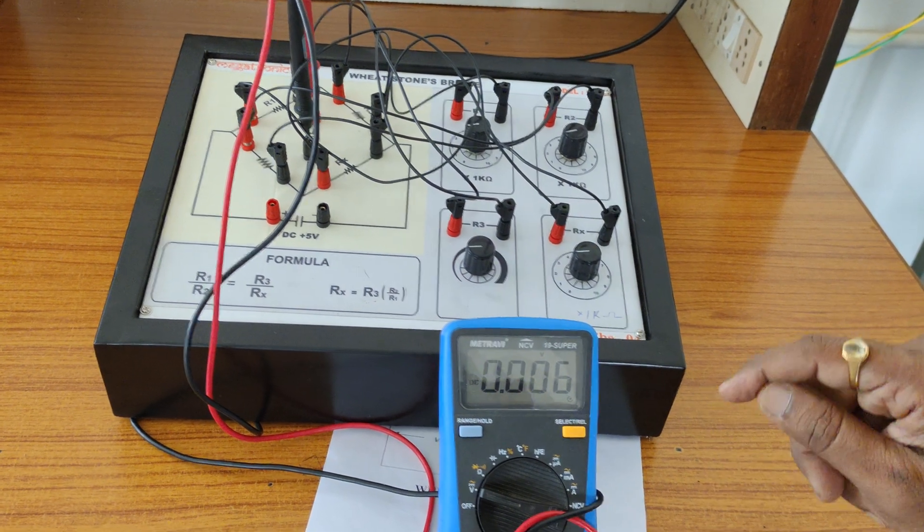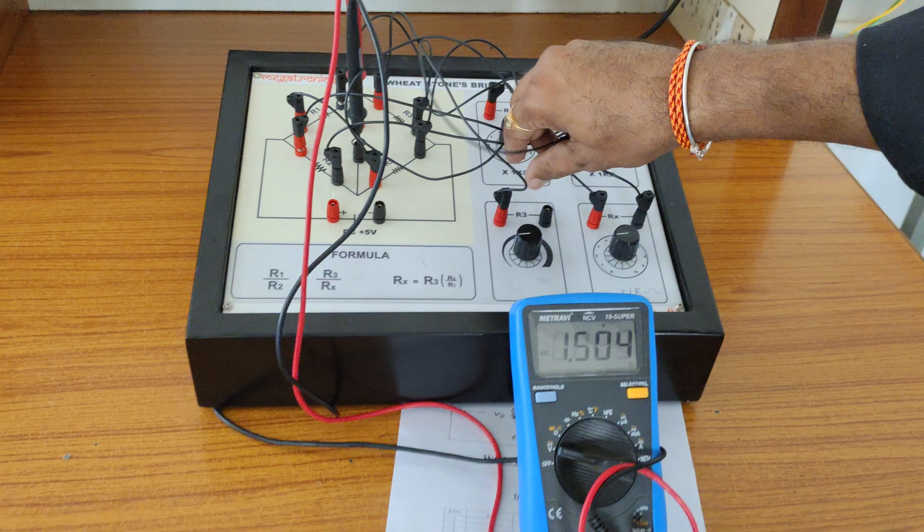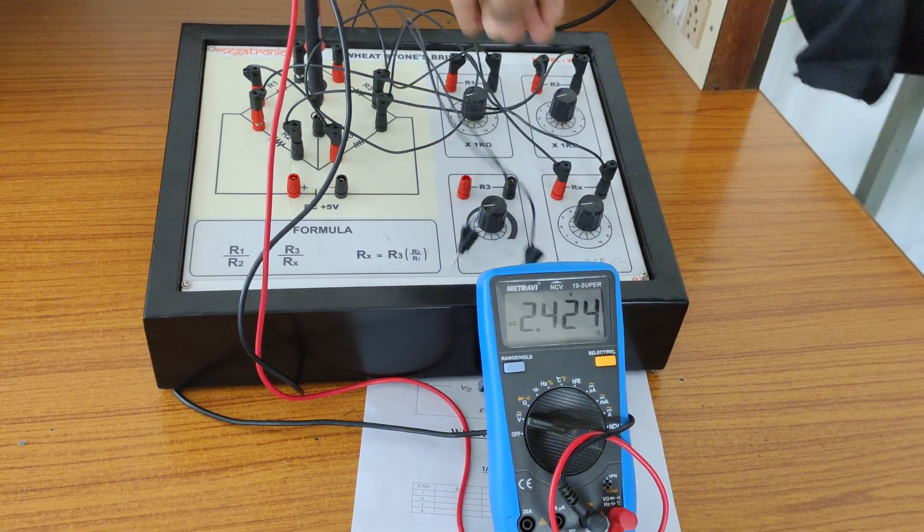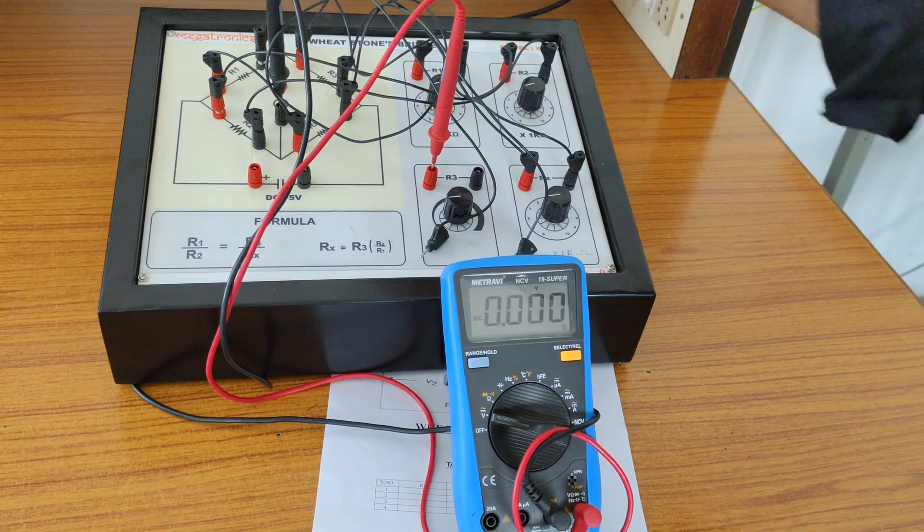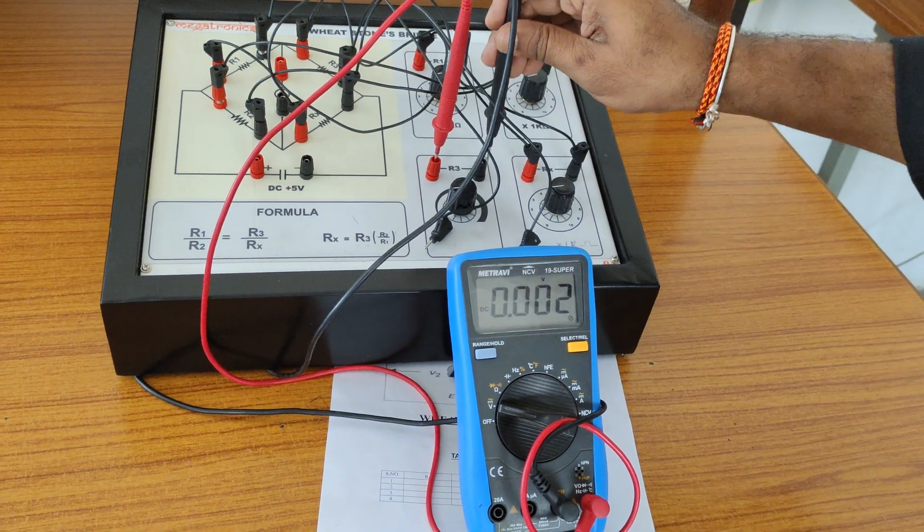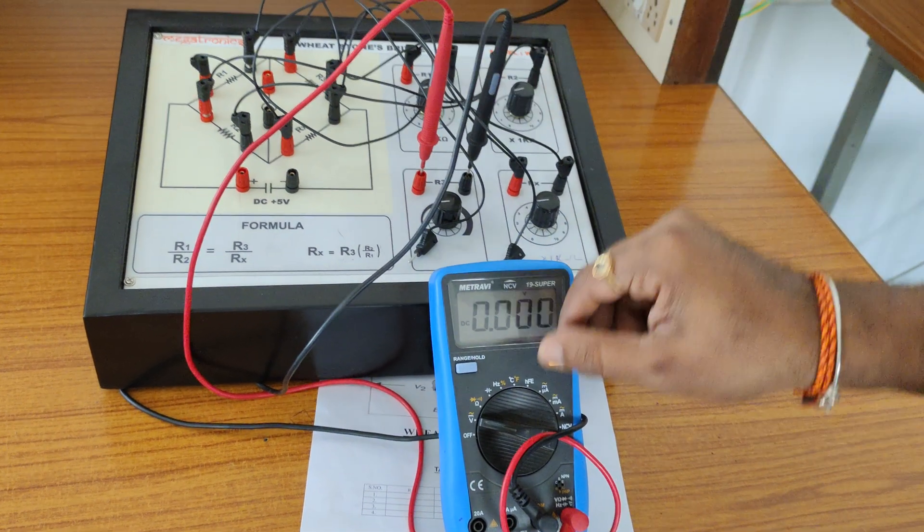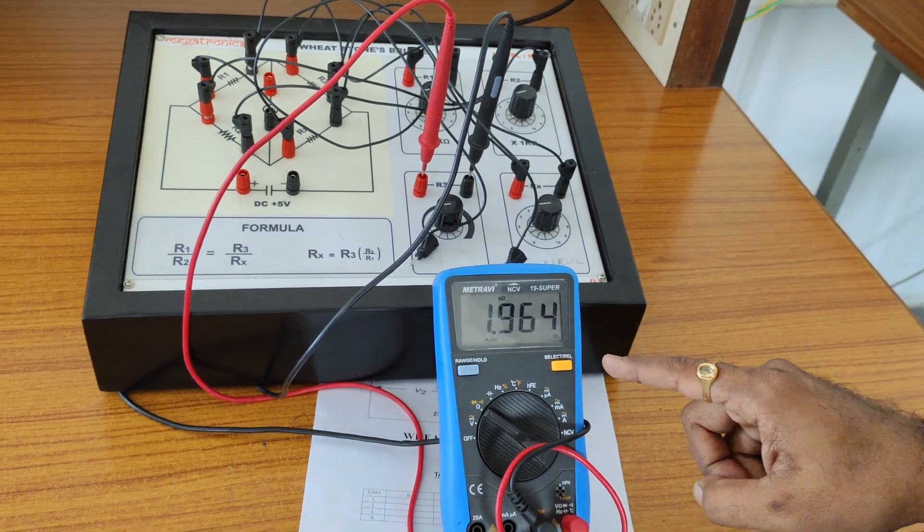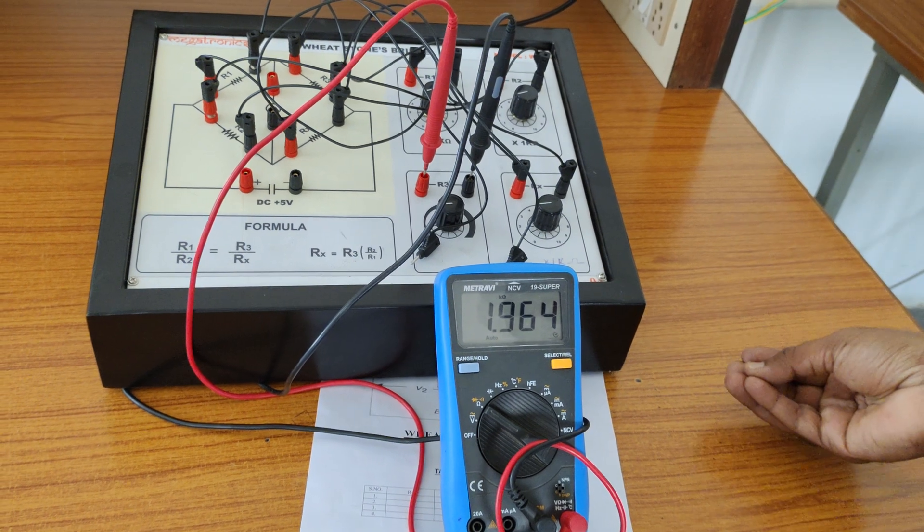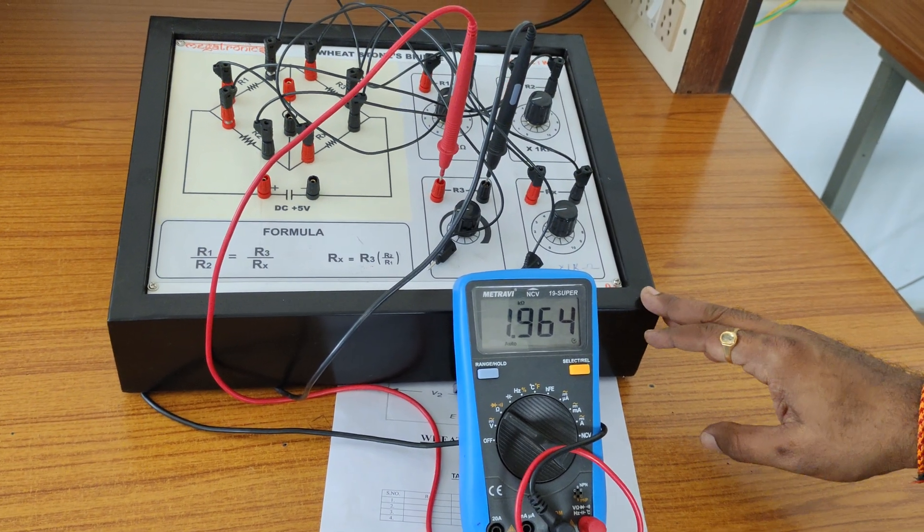Yeah, it's approximately 0.006. Then remove these two wires and make it here in order to observe the value of our reading. Right now I changed it to 2, so the value may be how much you can observe: it's approximately 2 kilo ohms. Then we verify our unknown resistance with the help of Wheatstone Bridge. Thank you.